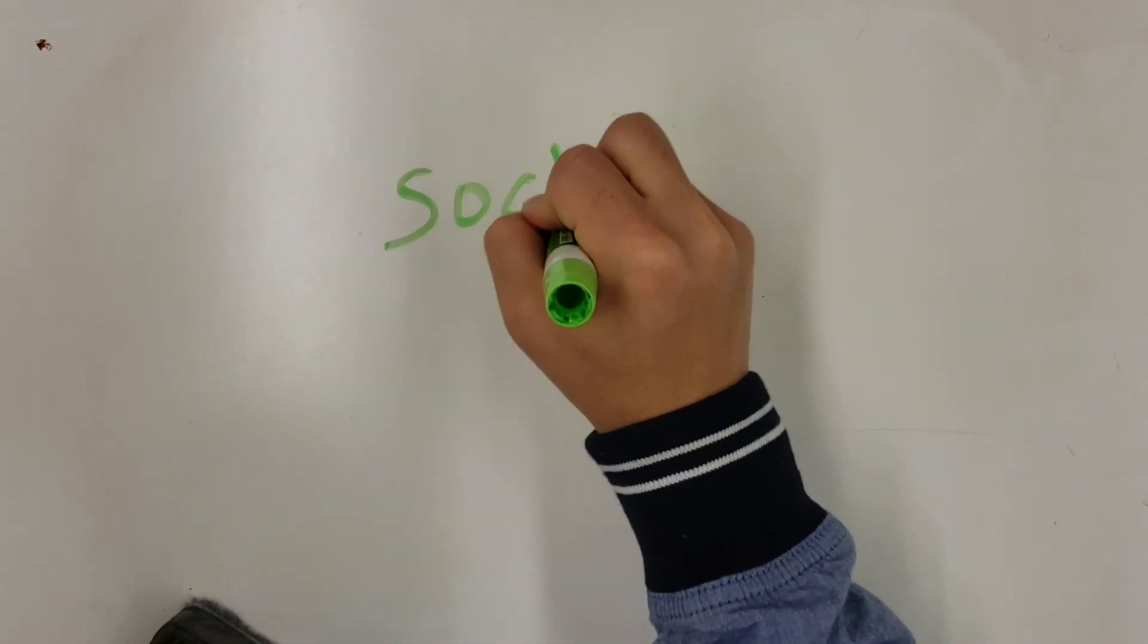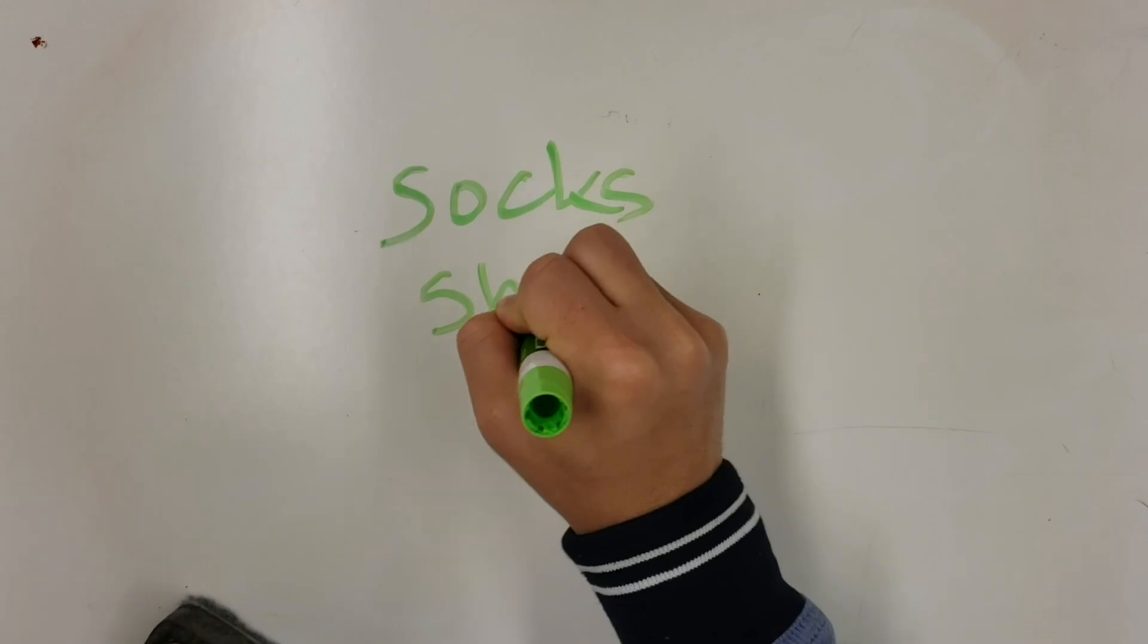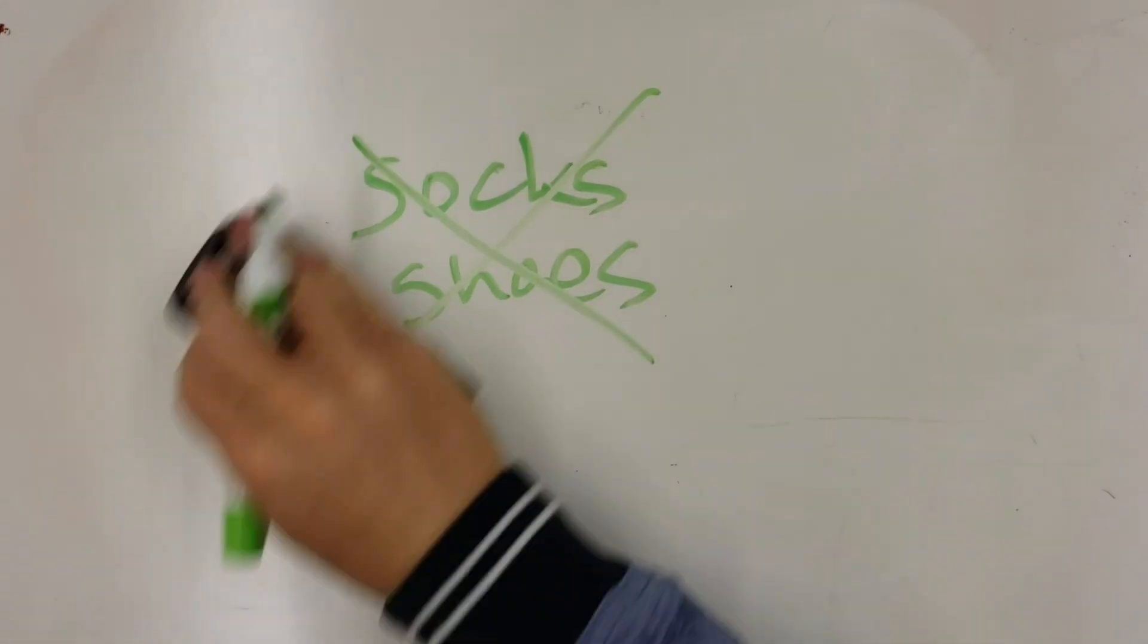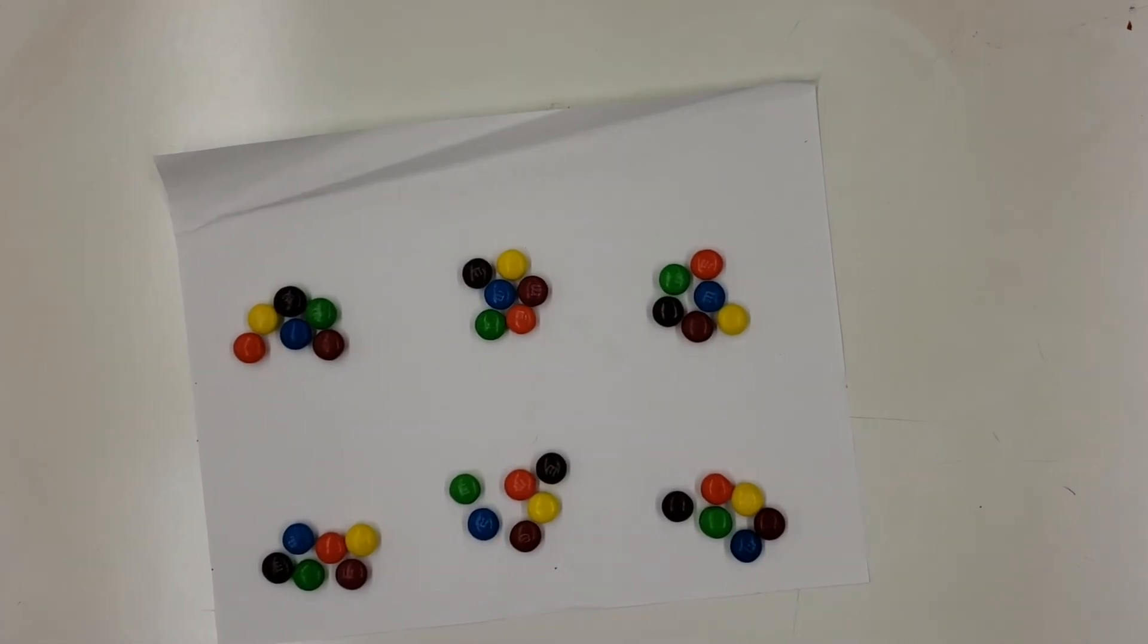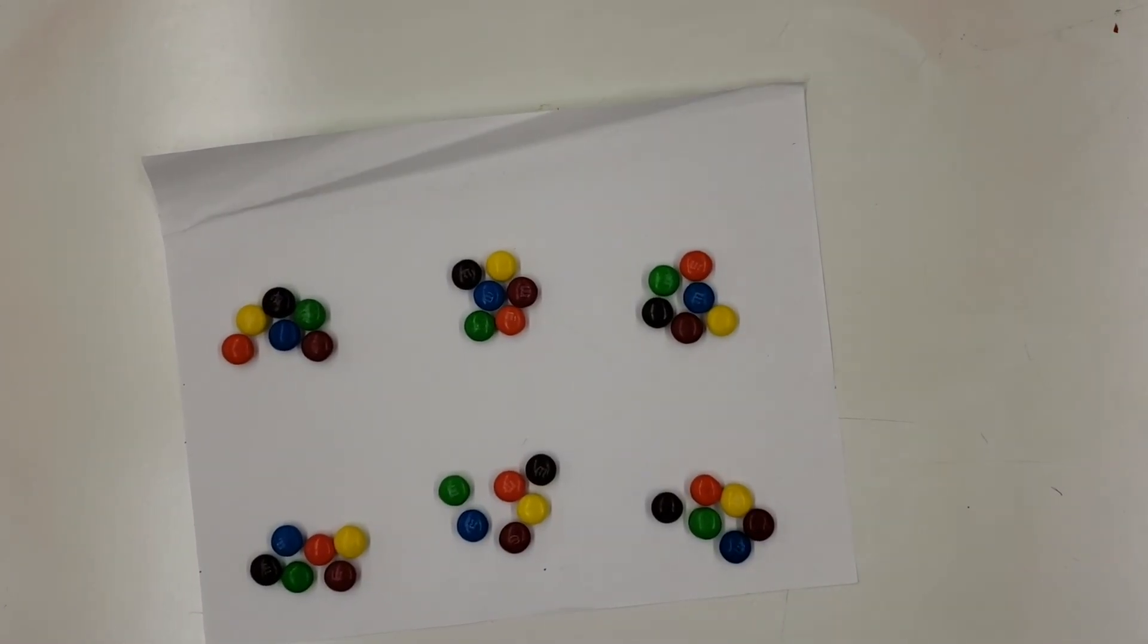A classic example of explaining the axiom of choice involves shoes and socks, but we'll be using something a little different instead. Let's first consider finitely many piles of M&Ms.